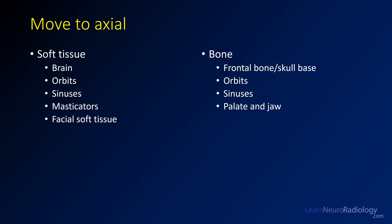Once you've gone through your coronal search pattern, I recommend going into axial. On the axials, take a similar approach to the coronals: look at the soft tissues first working down from the top — brain, orbits, sinuses through to the masticators and parapharyngeal space and facial soft tissues — then go back through and look at the osseous structures.